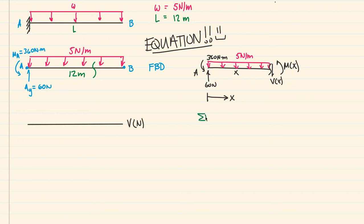If I take the sum of forces in the y-direction equal to zero at that cut, and I say up is positive, then I have the 60 newtons here, up, and then I have minus 5 newtons per meter times this distance x, and then finally this shear going down, which is minus V(x), and that equals zero. If I do the math, I get V(x) = 60 - 5x newtons. So the shear of this span in equation form is 60 - 5x.